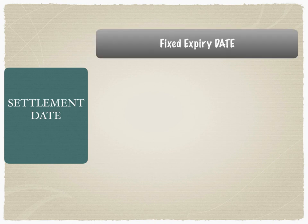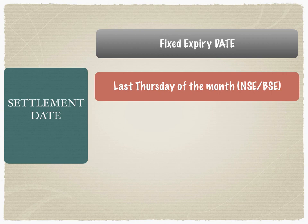The settlement date is a fixed expiry date. We use the term 'expiry' for futures because the contract expires. For NSE and BSE, the last Thursday of the month is the fixed expiry date. Compare this to the spot market, where NSE and BSE trade on T+1 — a rolling settlement every day. In futures, it is always a fixed expiry date — that is the biggest difference between the spot market and the derivatives market.